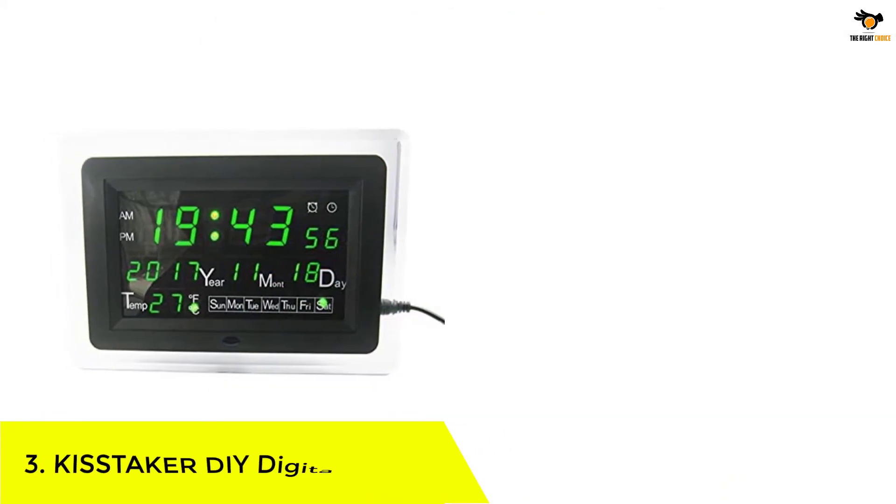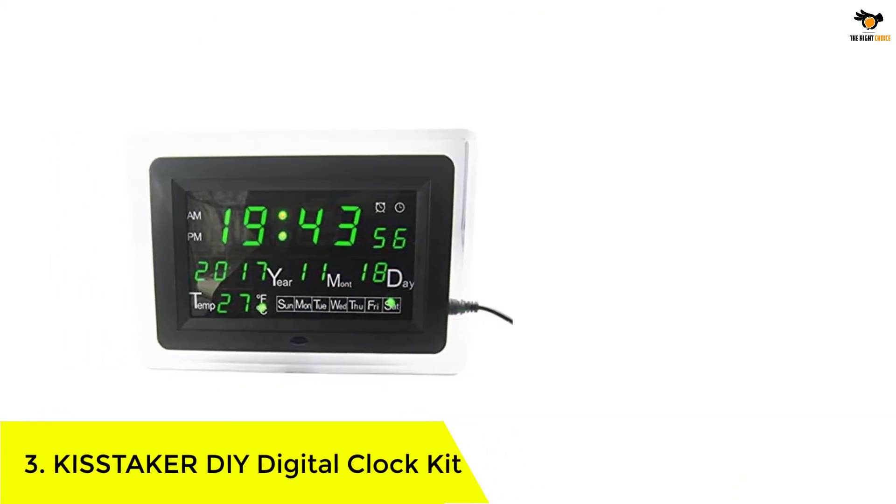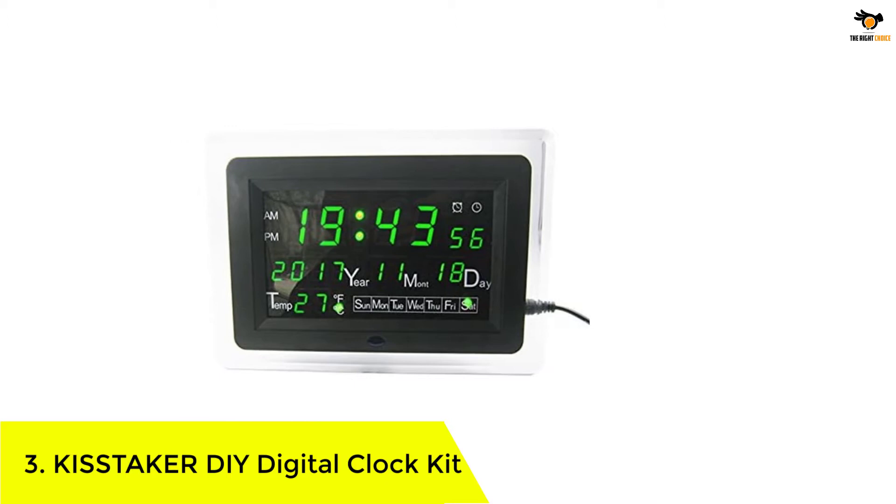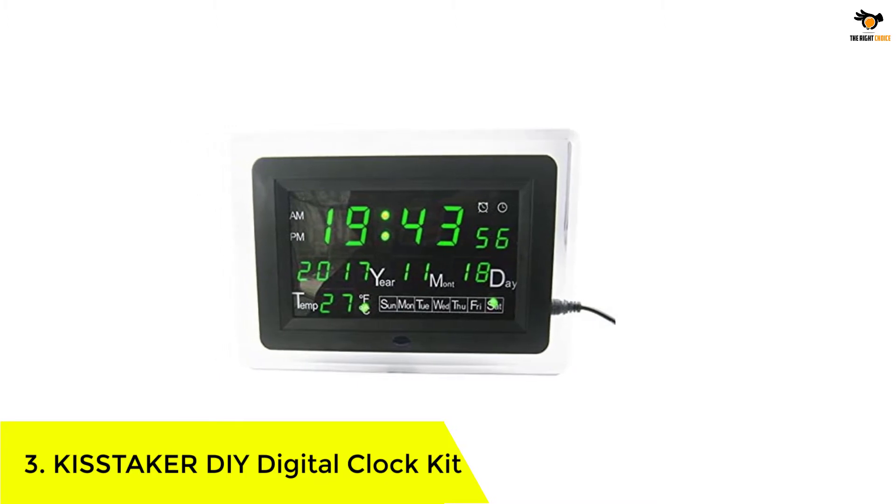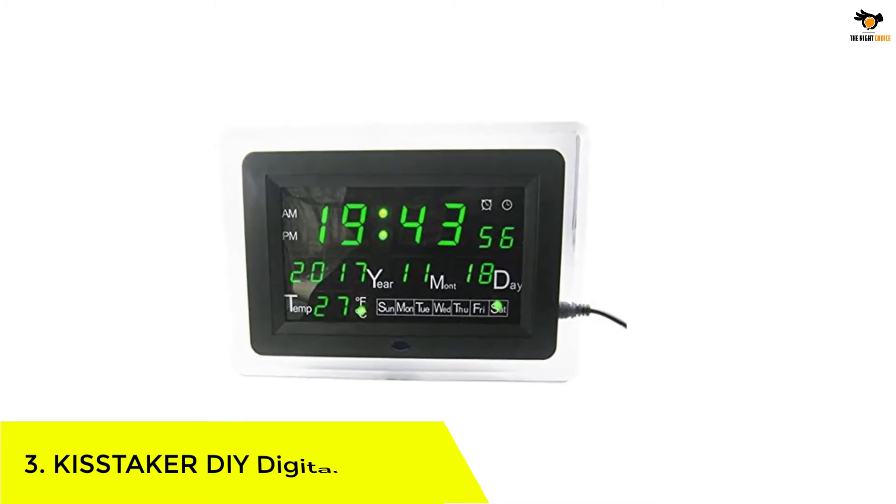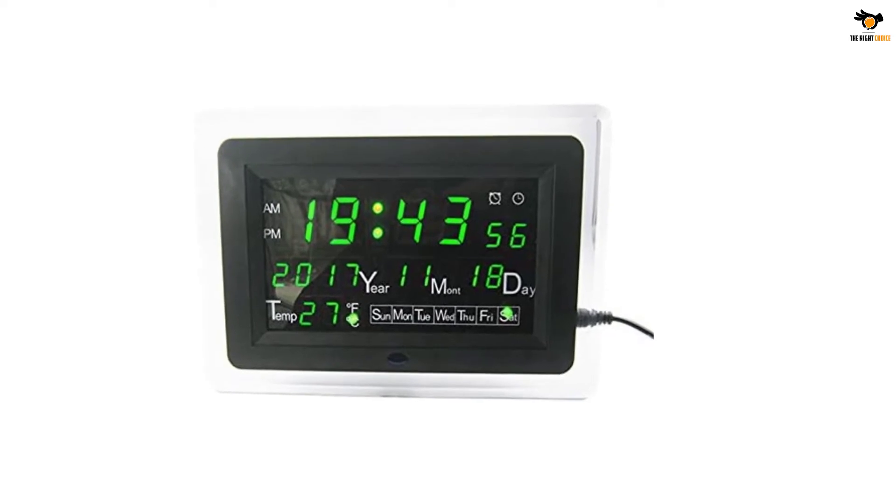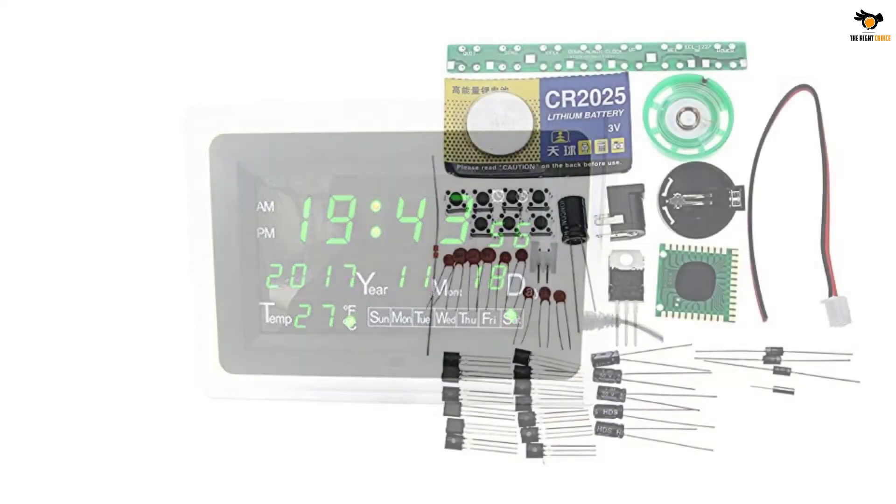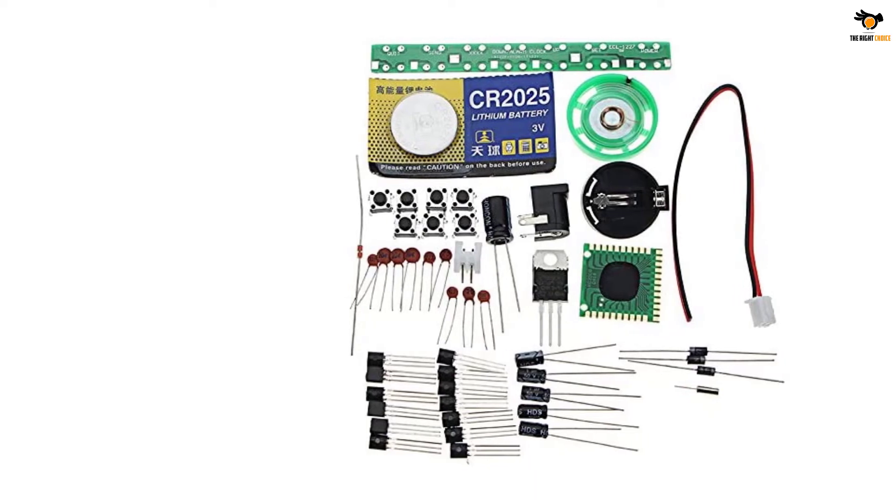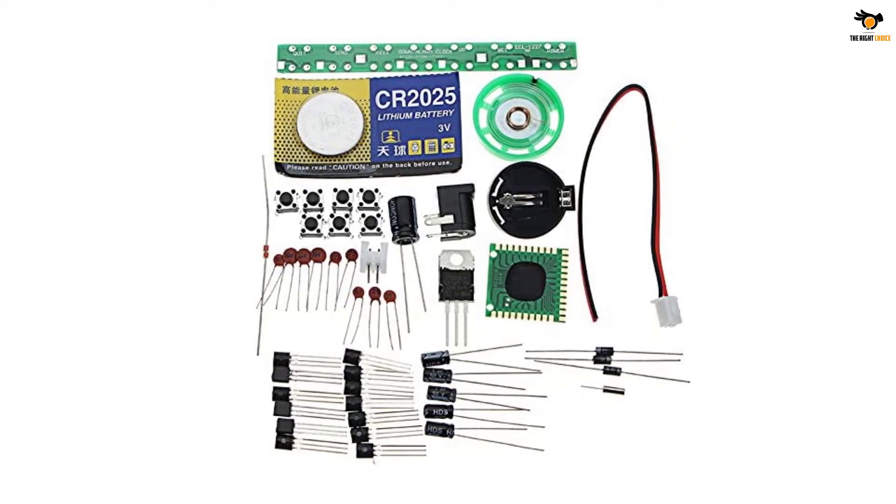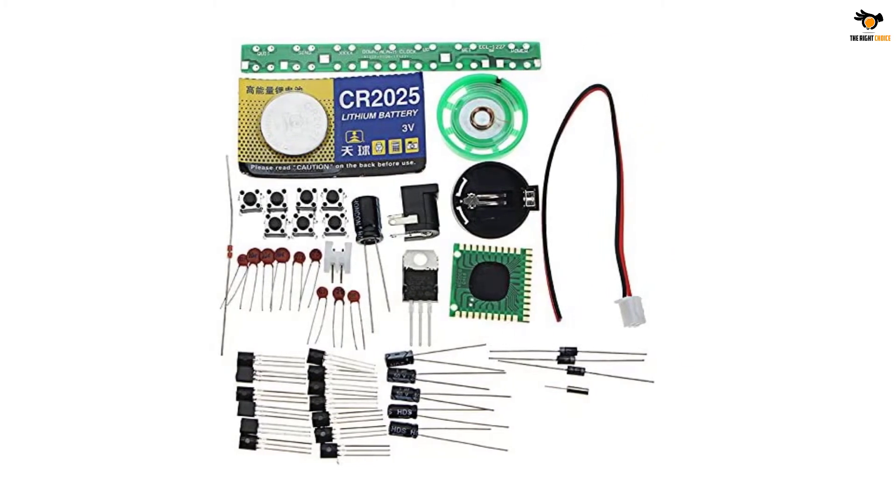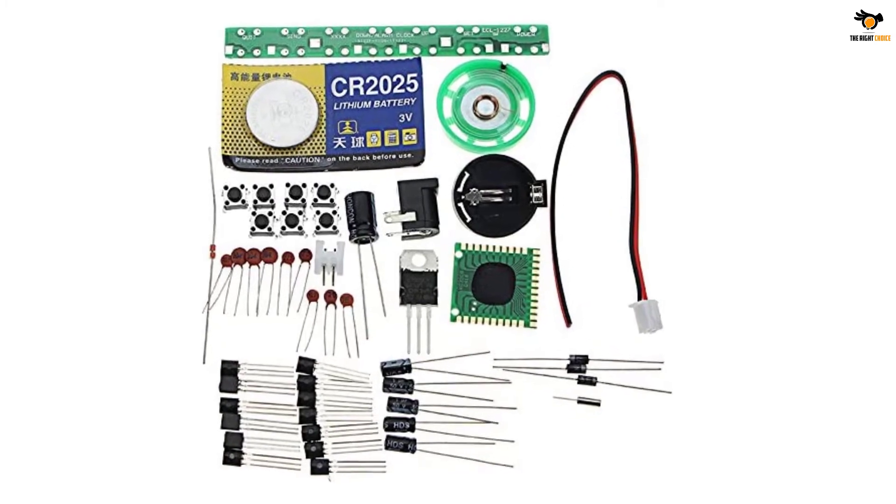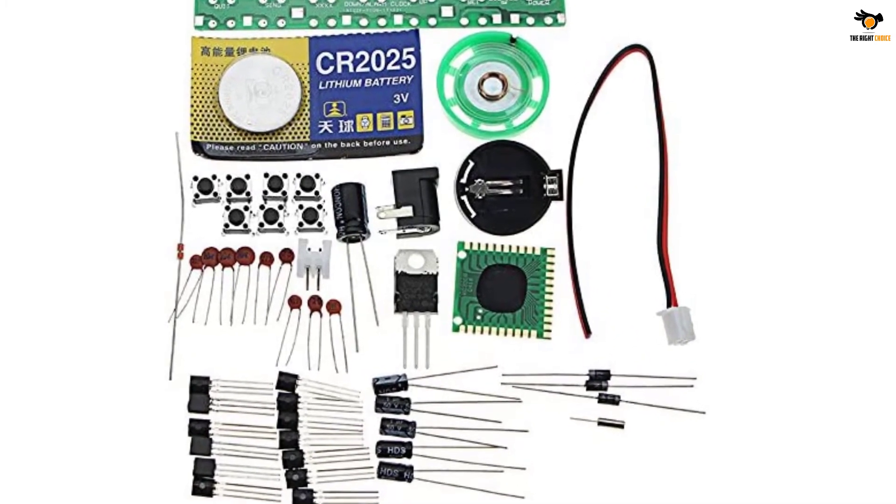Number 3: KISTAKER DIY Digital Clock Kit. This DIY clock kit from KISTAKER comes with all high-quality components. Using the instructions provided on the product page and some electronic soldering experience, you can complete the project without any issues. It has a 12/24-hour system which can be switched anytime as per your requirement.